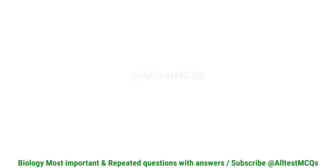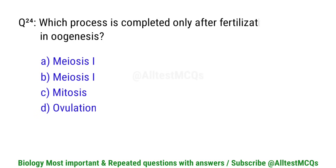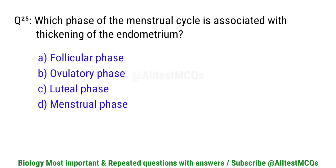Question number 24. Which process is completed only after fertilization in oogenesis? Correct option is B. Meiosis.